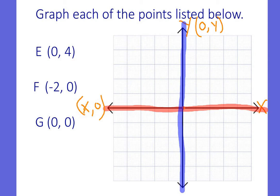Okay, so let's look at point E. 0, 4. 0 means I go nowhere. I don't go left or right, but then I go up 4. So that would be point E.